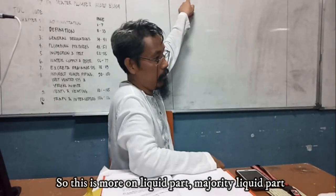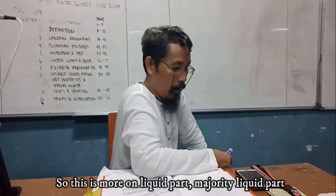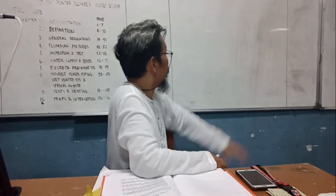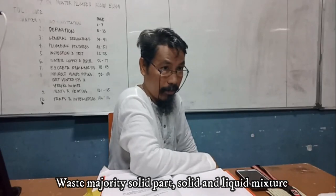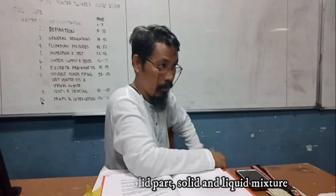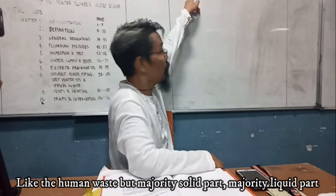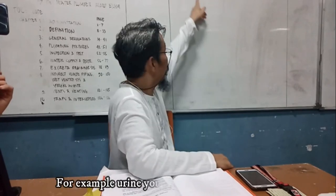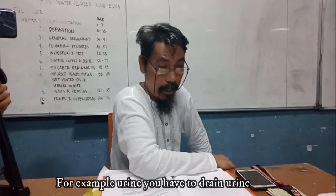Drain is more on the liquid part — majority liquid. Waste is majority solid part. So it's a solid and liquid mixture, like human waste, but majority solid. Drain, on the other hand, is majority liquid. For example, urine — urine is a drain, you have to drain the urine.